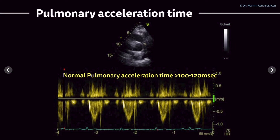We can measure, for example, the pulmonary acceleration time. The pulmonary acceleration time is this time interval here — this is where right ventricular systole starts, and until you reach the peak, a certain time interval passes, and that's the pulmonary acceleration time. Depending on age, the normal value is above 100 to 120 milliseconds. This would be a normal example of a pulmonary acceleration time.